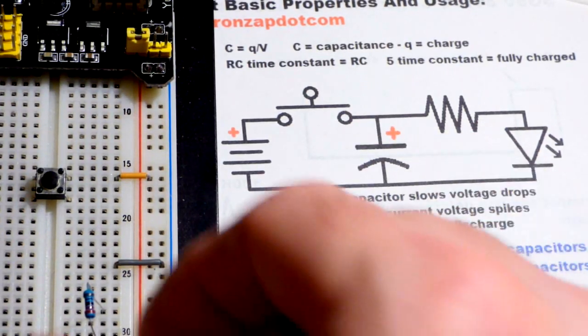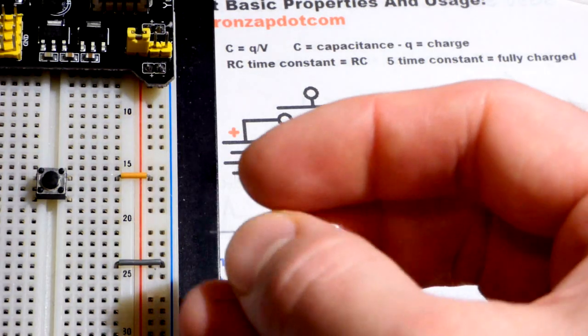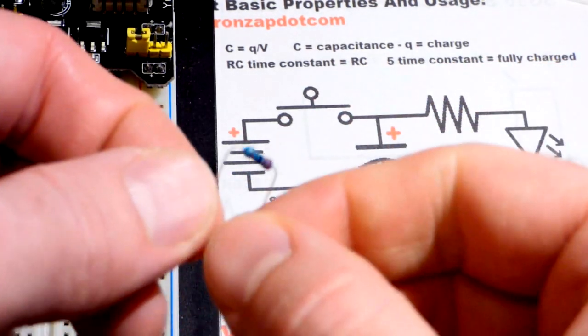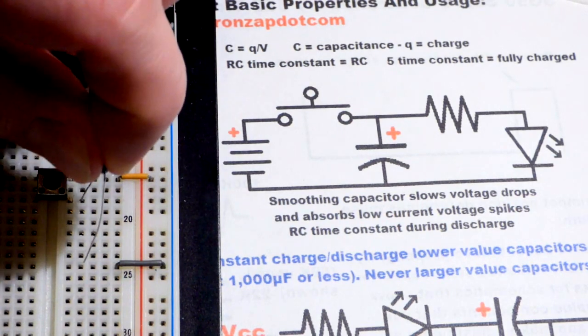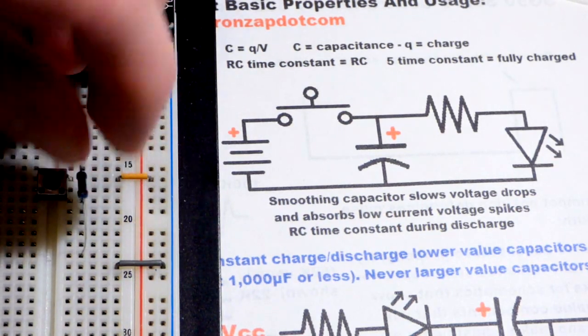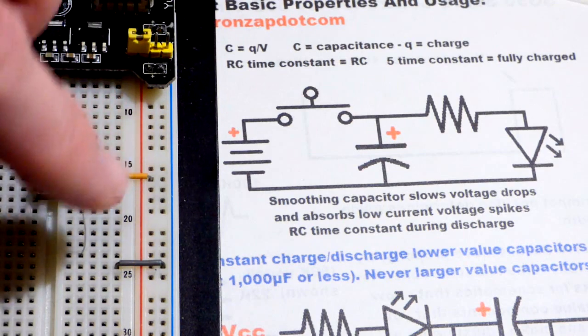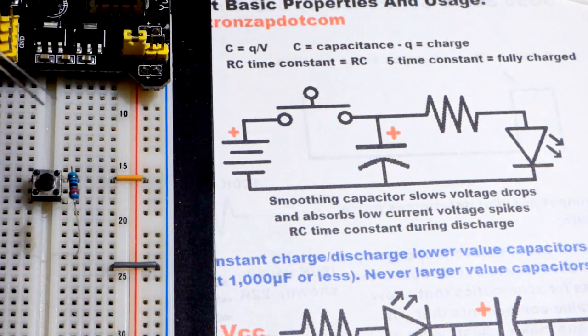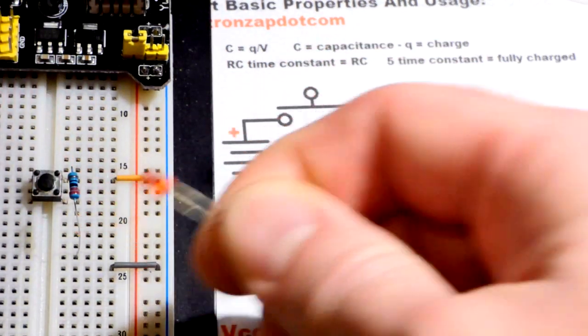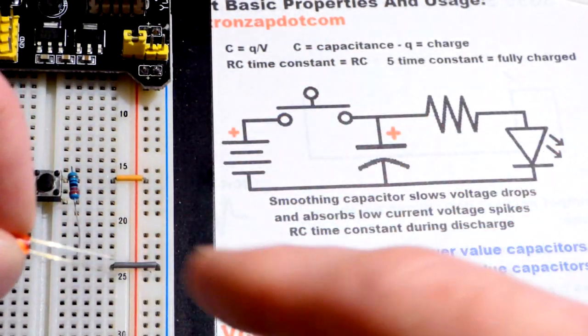First off I'm going to use a 220 ohm resistor, a very common value resistor, and put it one space away from the jumper there. So this is going to limit current through the LED right here.